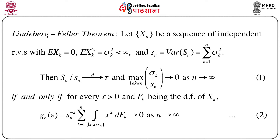Let us prove the Lindeberg-Feller theorem. Here also we assume that X_n is a sequence of independent random variables, and we are not assuming that they are identically distributed. We assume only independence, and that E[X_k] = 0, E[X_k²] = σ_k² < ∞, and s_n² equals the variance of S_n which equals Σ_{k=1}^{n} σ_k².